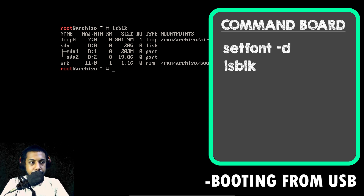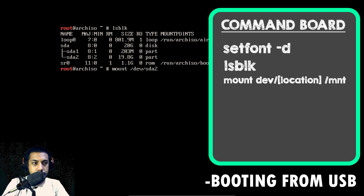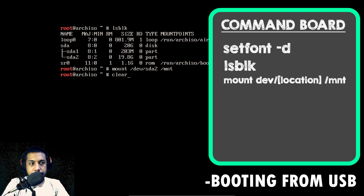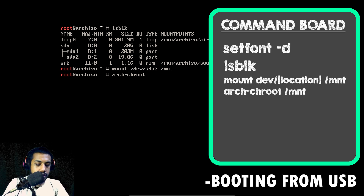So with this information, what we can do is type `mount` and then `/dev/SDA2` to `/mnt`. We're mounting SDA2 to our `/mnt` directory. If I just hit enter, it will be mounted there. After it's done mounting, we can simply type `arch-chroot /mnt`.